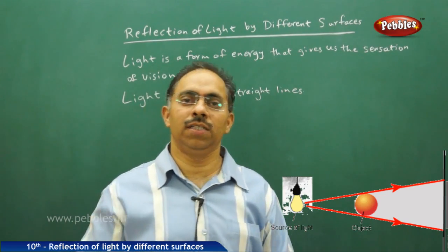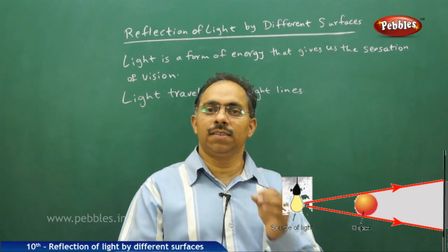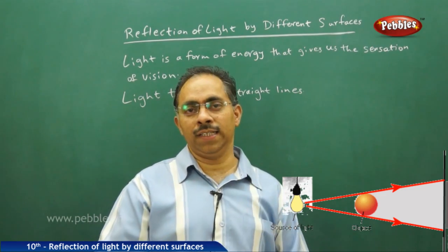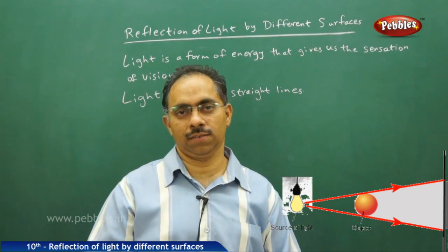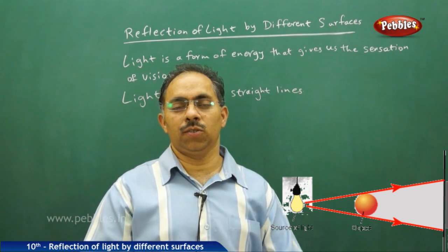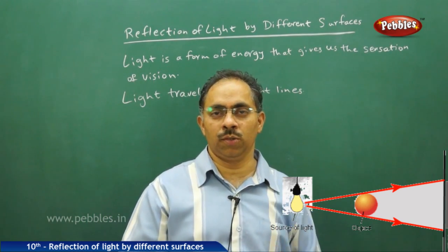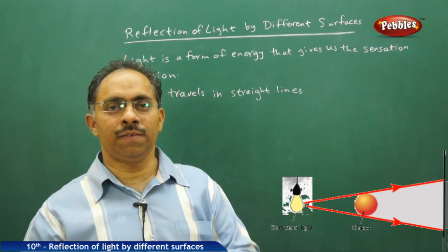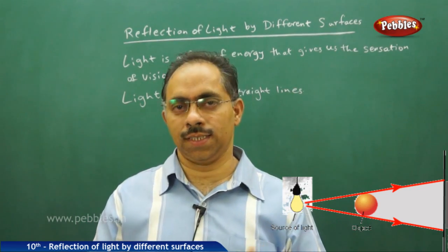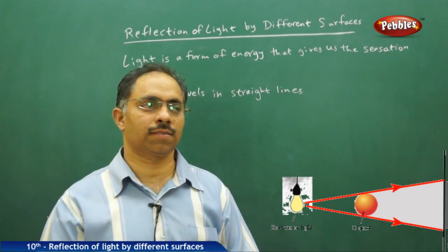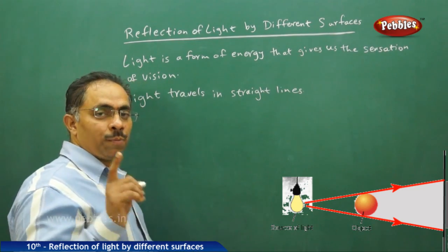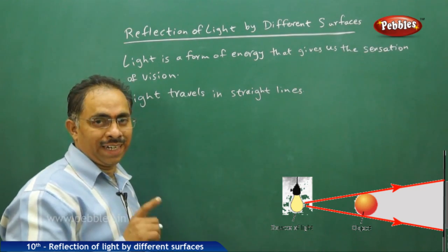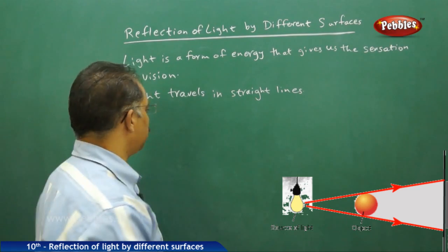If a body does not allow any of the light to pass through it, then that body is called an opaque body. It is these opaque bodies which cast shadows. The opaque bodies either absorb the light which is incident on them, or they bounce back the light into the same medium through which it is traveling. It is because of these opaque bodies and the rectilinear propagation of light that we have the concept of shadow.